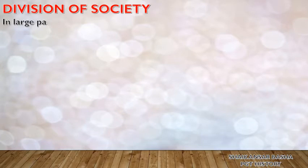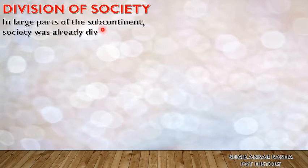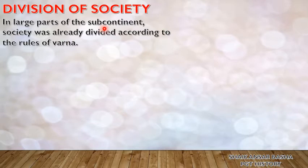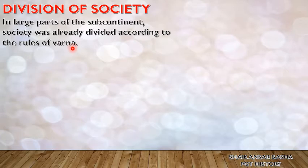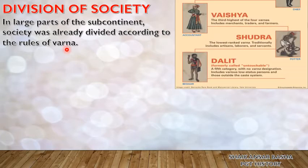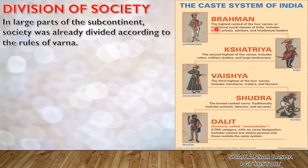Regarding the division of society: the subcontinent refers to the countries of India, Pakistan, Bhutan, Nepal and Bangladesh together. In larger parts of the subcontinent, society was already divided according to the rules of varna. Varna means caste. These rules were framed in the Dharma Sutras and Dharma Shastras by the Brahmanas. We have four important castes: Brahmanas, Kshatriyas, Vaishyas and Shudras.